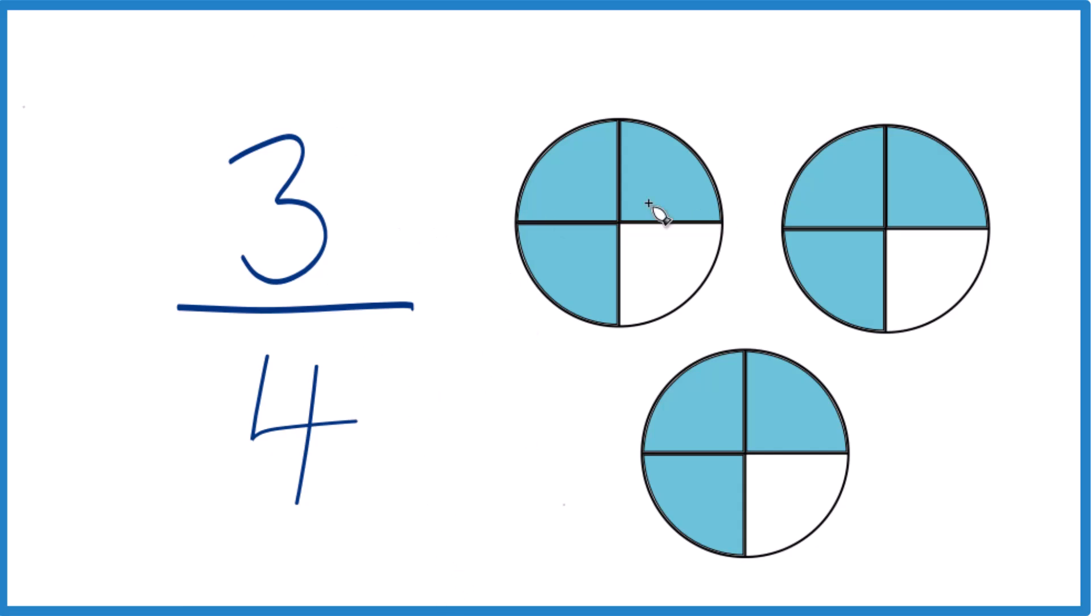So we have our three-fourths cup. Each cup is divided into four pieces, and I have one, two, three pieces shaded in. That's three-fourths of a cup. So here's our three-fourths cup, three-fourths cup, three-fourths cup.